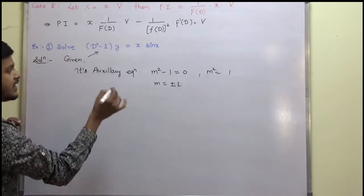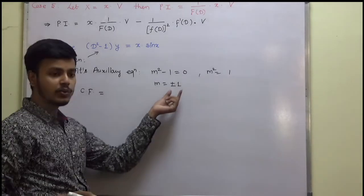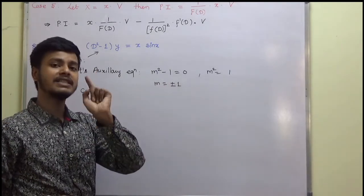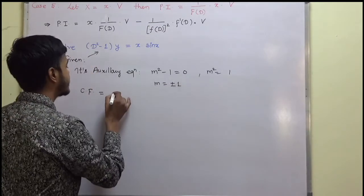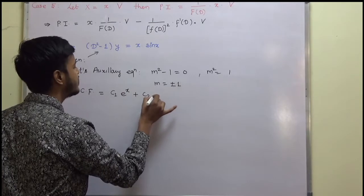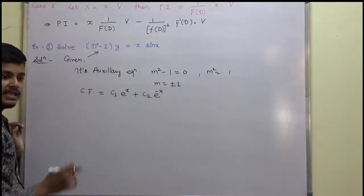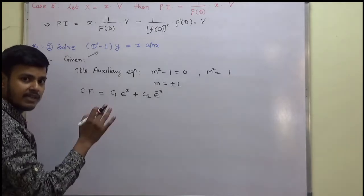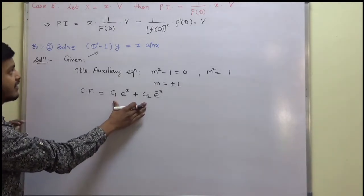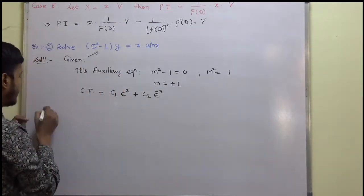So we have m equal to plus 1 and minus 1. Since the roots are real and unequal, this falls under the first case of the complementary function, which says we can write CF as c₁e^x + c₂e^(−x).